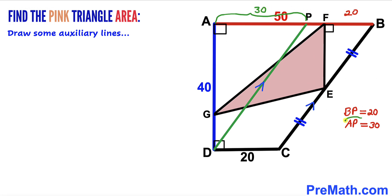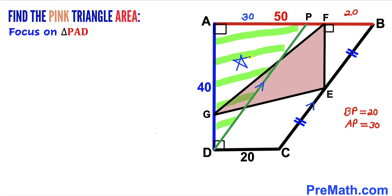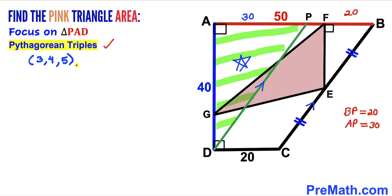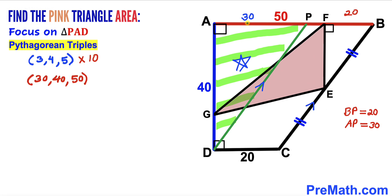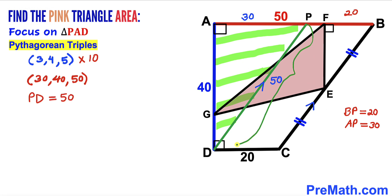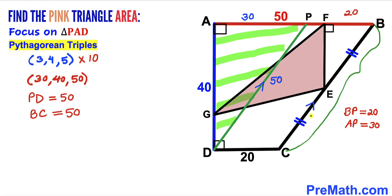Now let's focus on right triangle PAD, whose legs are 30 and 40. Recalling the Pythagorean triplet 3-4-5 and multiplying by 10 gives us 30-40-50. Since our two known sides are 30 and 40, the missing side length PD is 50 units. Since PD was drawn parallel and equal to BC, we conclude that BC is also 50 units.